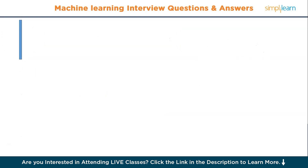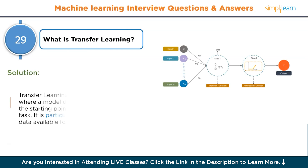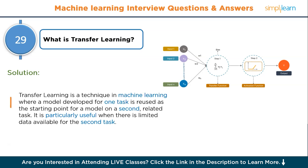Question number twenty-nine: what is transfer learning? Transfer learning is a technique in machine learning where a model developed for one task is reused as the starting point for a model on a second, related task. It is particularly useful when there is limited data available for the second task.